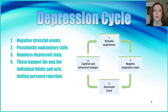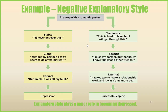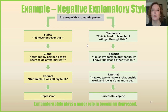Let's look at the depression cycle. Everyone has stressful experiences, but how we explain or look at those experiences can be very different. If you have a stressful experience and explain it in a very negative or pessimistic way, it can lead to a depressed mood, which can lead to further cognitive and behavioral changes, further stressful experiences, and continues that cycle. For example, someone who breaks up with a romantic partner and has a negative explanatory style might think the breakup is their new norm — they think 'I'll never get over this,' start thinking globally like 'without my partner I can't do anything right,' and internalize the breakup as being all their fault. This can lead to depression.